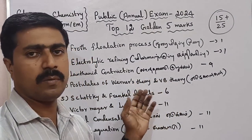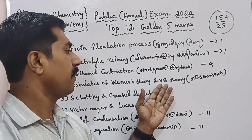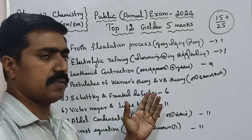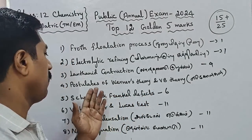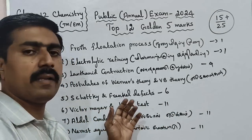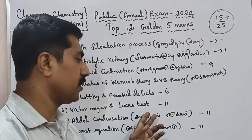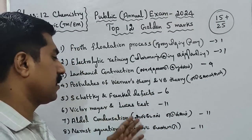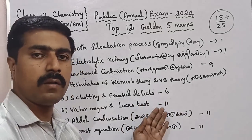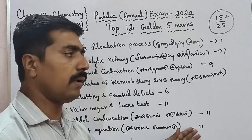Questions from Unit 6, Unit 6, Unit 1, Unit 1, Unit 3, Unit 1 are also covered. Aldol reaction is from Unit 11. Then, Nernst Equation — Nernst is Unit 11.